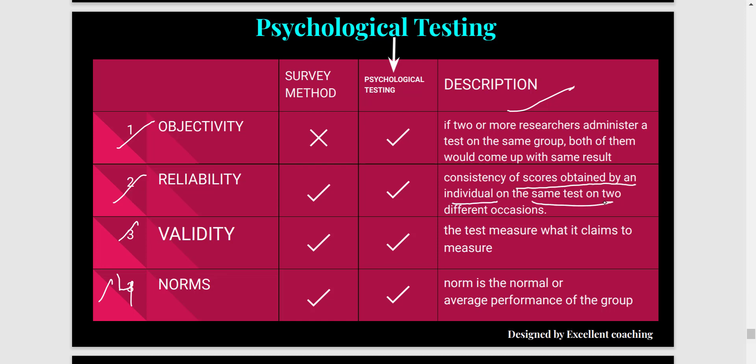The second property is reliability — the consistency of scores obtained by an individual on the same test on two different occasions. Suppose you are administering a test on the same person with a gap of a few days, hours, or even years. If your test is reliable, the scores obtained by that individual must be similar, though they may have some small amount of difference.